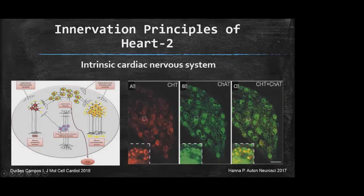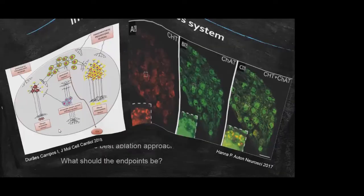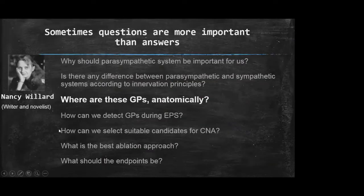Today we can say that we can also denervate the sympathetic system by using a cardioneural ablation strategy. This is a totally new area for cardioneural ablation. The main issue is: where are these GPs? We should know anatomical data to understand their localization.